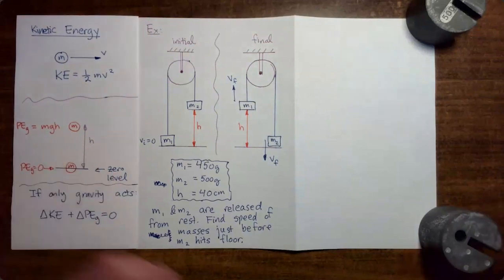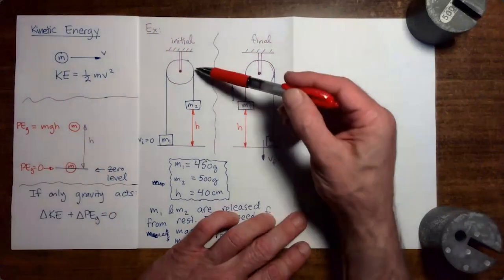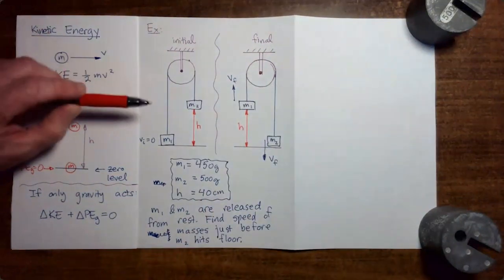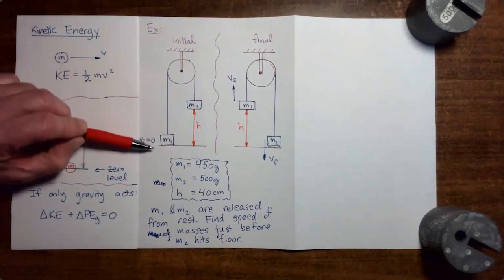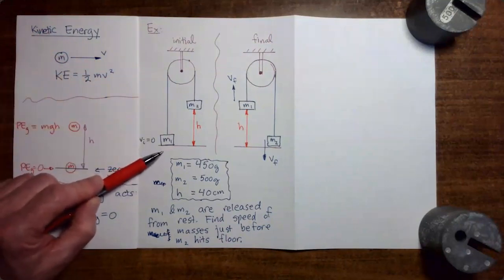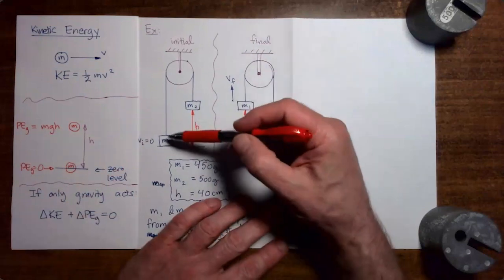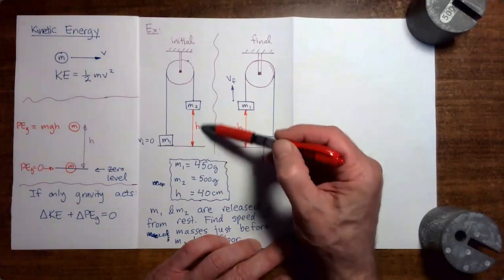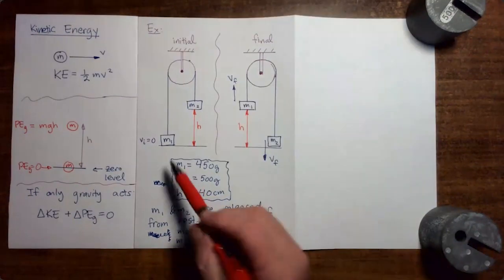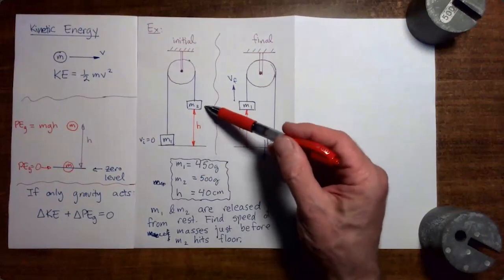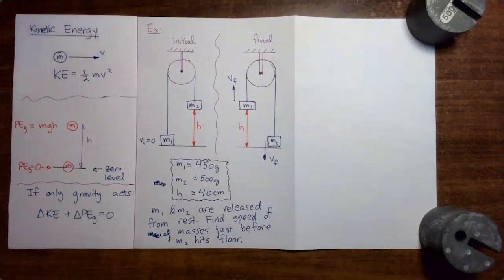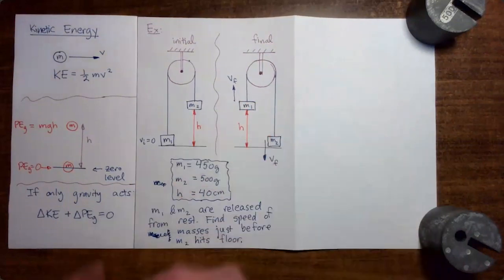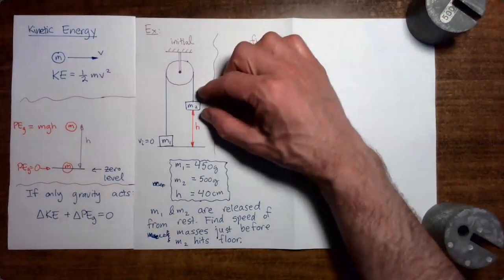Here's the example problem. We have a situation where there is a pulley supported at the ceiling, and we have a string going over the pulley. One end of the string goes all the way down to a mass m1, which is sitting on the floor. Then that string goes over the pulley and down to a mass m2, which is at a height h above the floor. Mass 1 is the lighter of the two masses, and mass 2 is the heavier. We assume that there is something holding the system in place.